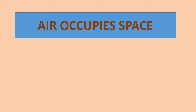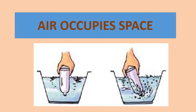Take an ordinary transparent empty tumbler, turn it upside down, and dip it into a container of water. Does water rush into the tumbler? You can see that water is not getting inside the tumbler. Now tilt the tumbler a little bit and you will see that water rushes in. Why? Because the air inside the tumbler escapes in the form of air bubbles, and that space is then filled by water. This proves that air occupies space.